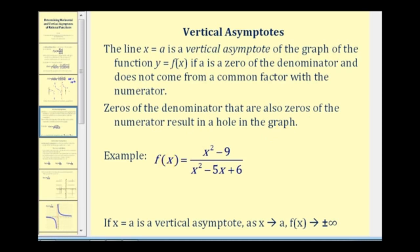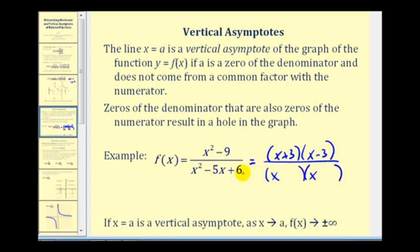For example, if we take this function, the first thing we want to do is factor both the numerator and denominator. The numerator factors as x plus three times x minus three, and the denominator factors — looking for factors of positive six that add to negative five — as x minus two and x minus three. Notice there are two values that make the denominator equal to zero, so the domain must exclude x equals two and x equals three.